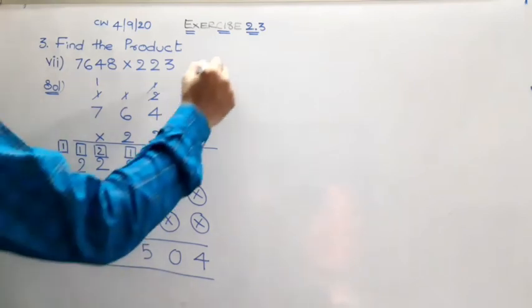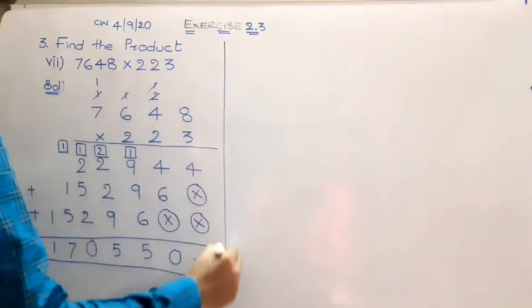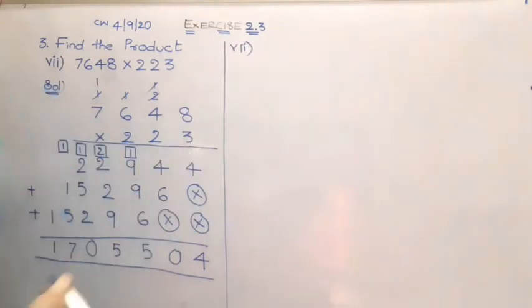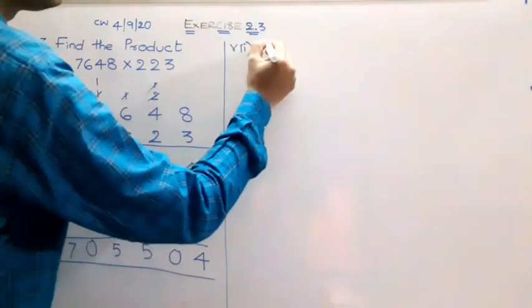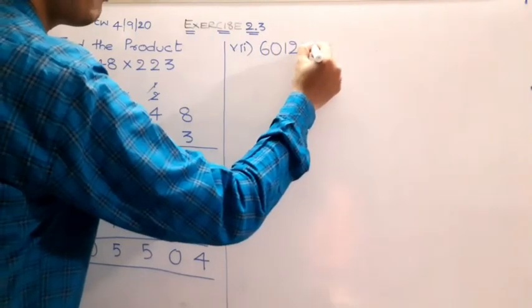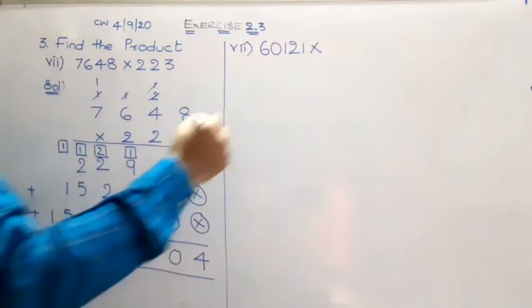Now let us move to the 8th one. The 8th one is 60,121 multiplied by 58.